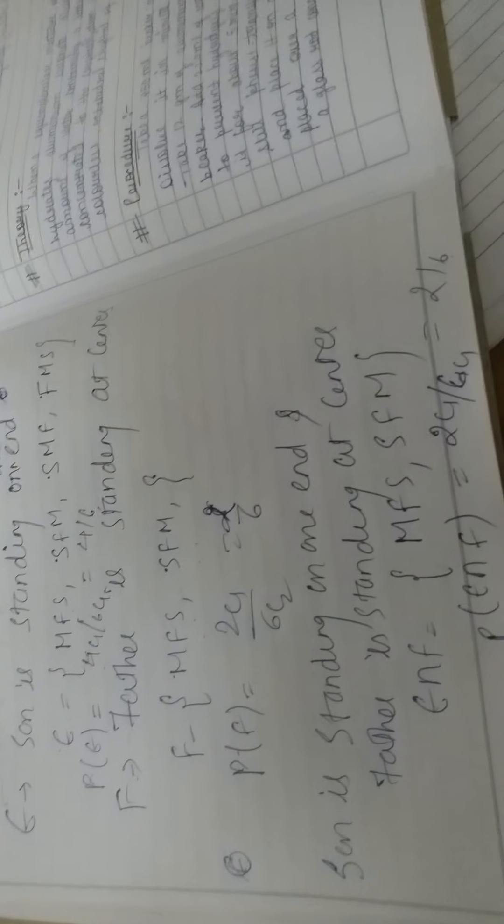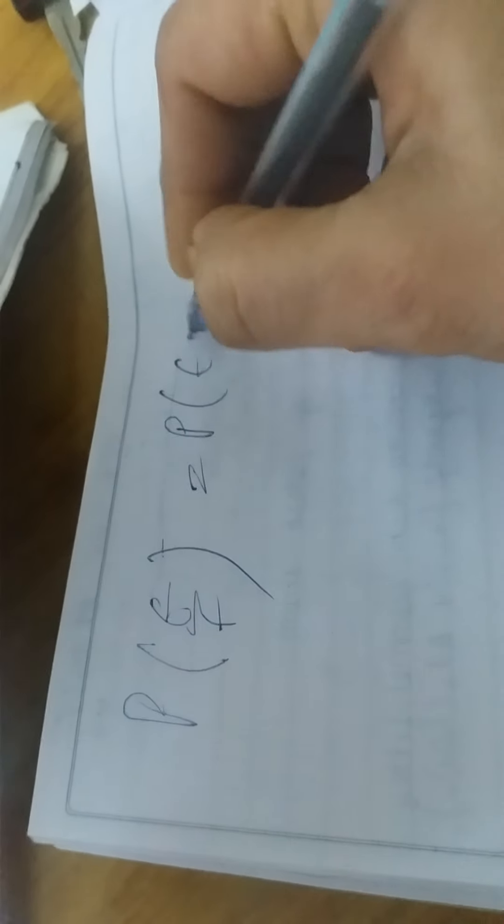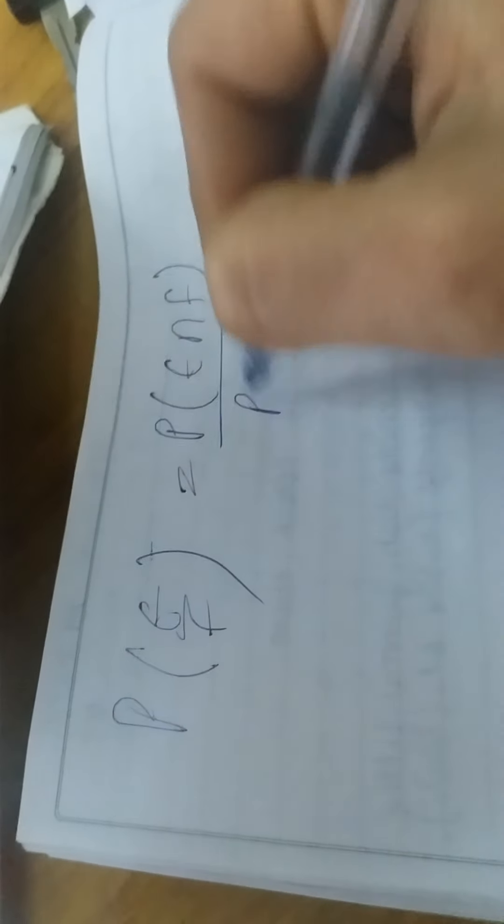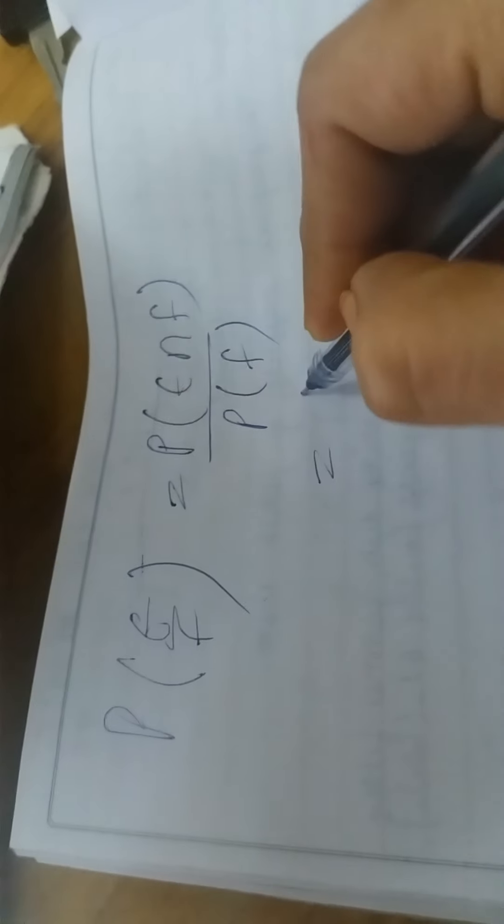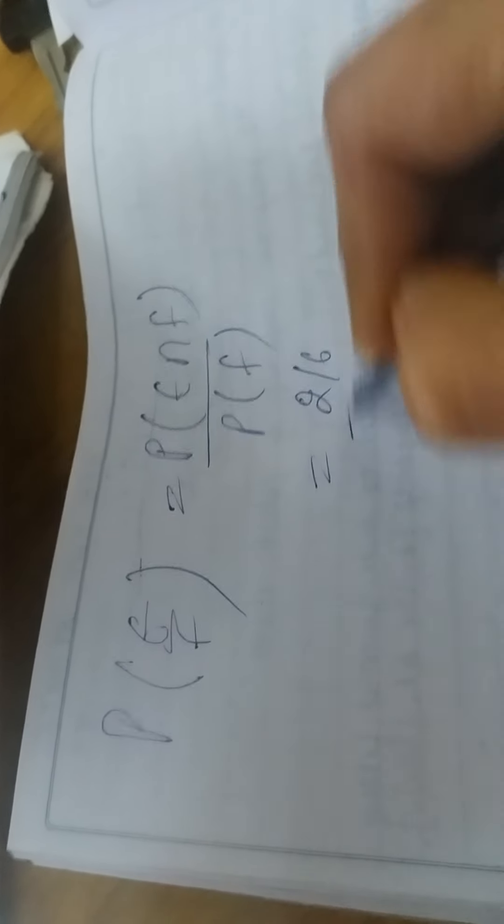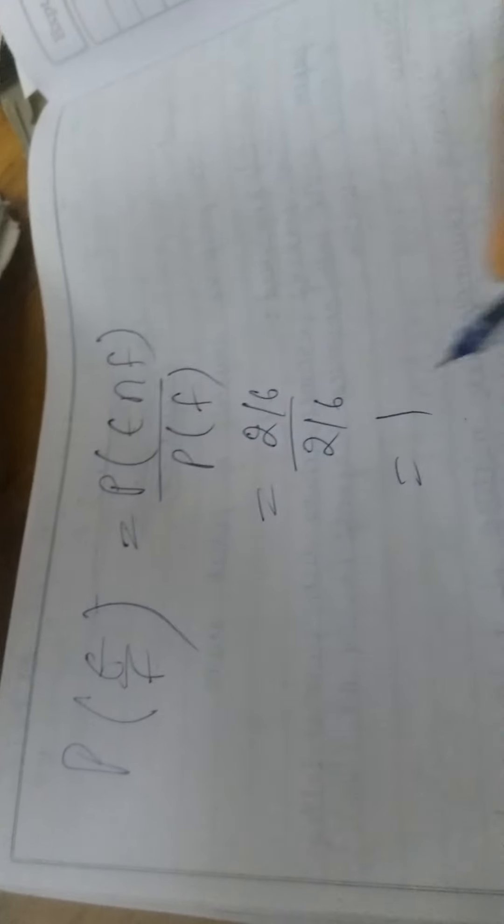E intersection F. Who will come to this? When you have E and you have F, so what do you have in the intersection? MFS and SFM. So P of E intersection F is 2C1 upon 6C1, that is 2 by 6. Now, we have to find probability P of E by F. P of E by F is P intersection F upon PF. P intersection F is 2 by 6 and this is also 2 by 6. In the similar manner, we can see question number 12.